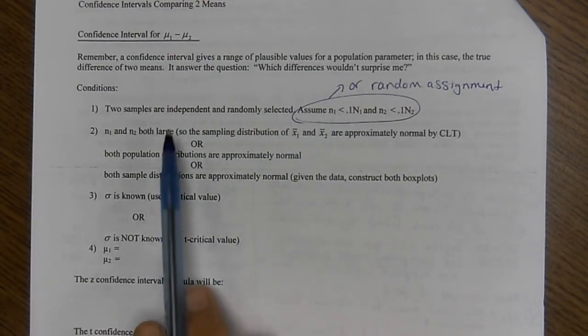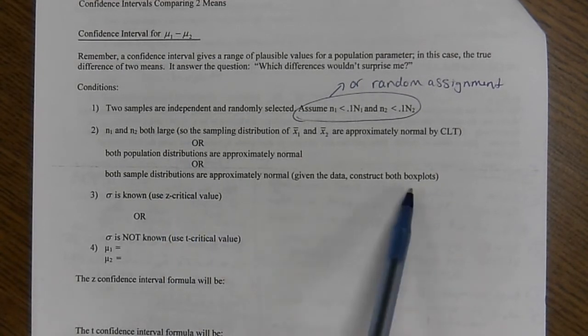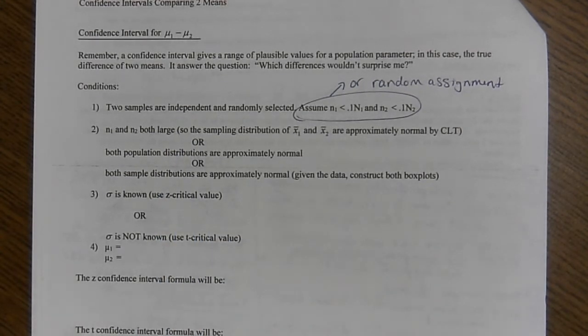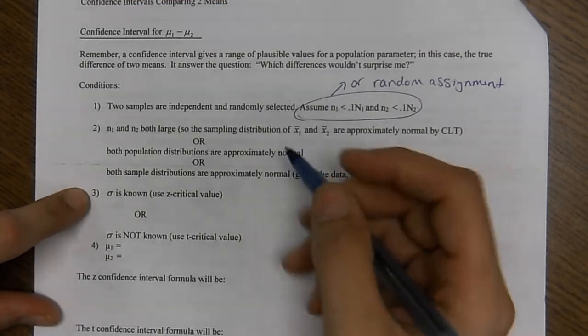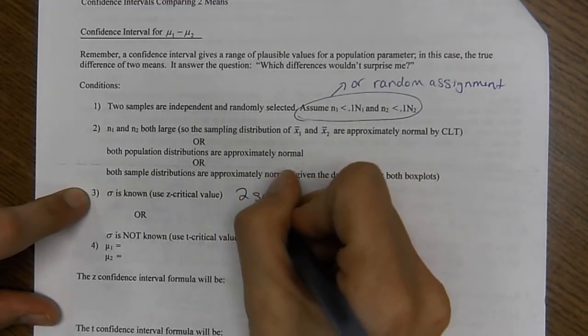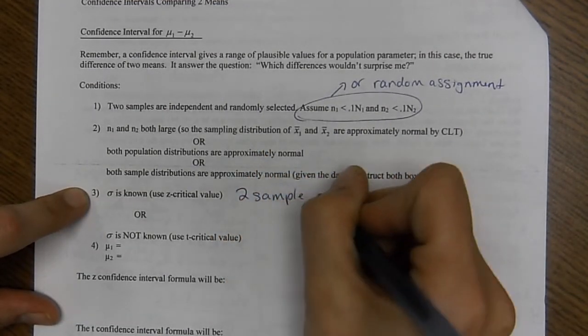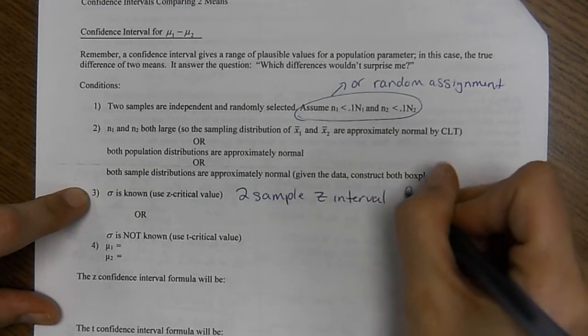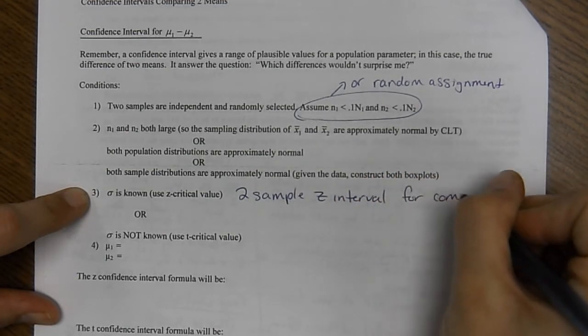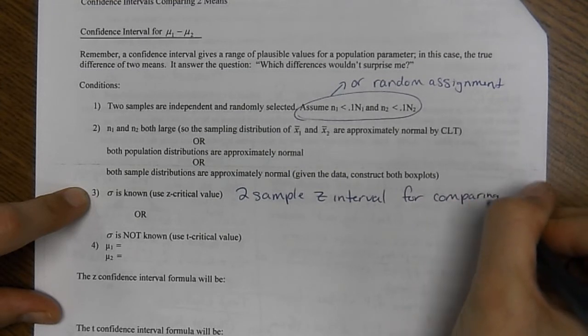The sample sizes are both large. We're going to do the box plots today. So get ready for that. Now, if we know the population standard deviation, we're going to do a two sample Z interval for comparing means.